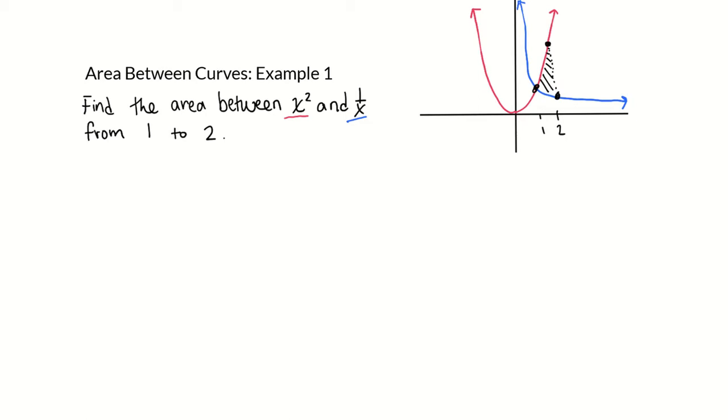The way we find area between curves is we're going to evaluate an integral between those two points, taking the larger function, which is the red one x squared, and subtracting the smaller function, which is the blue one 1 over x.